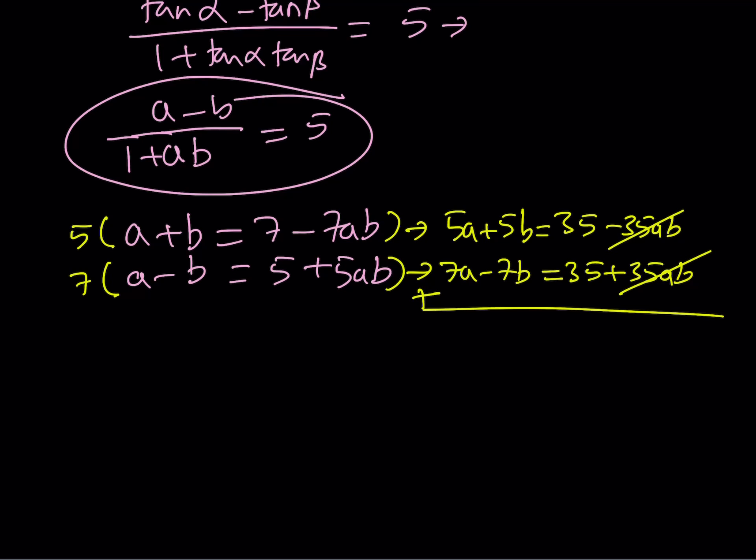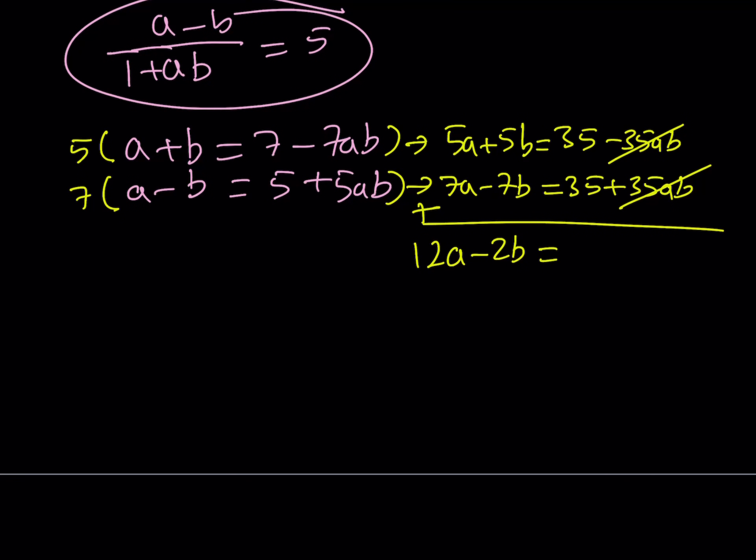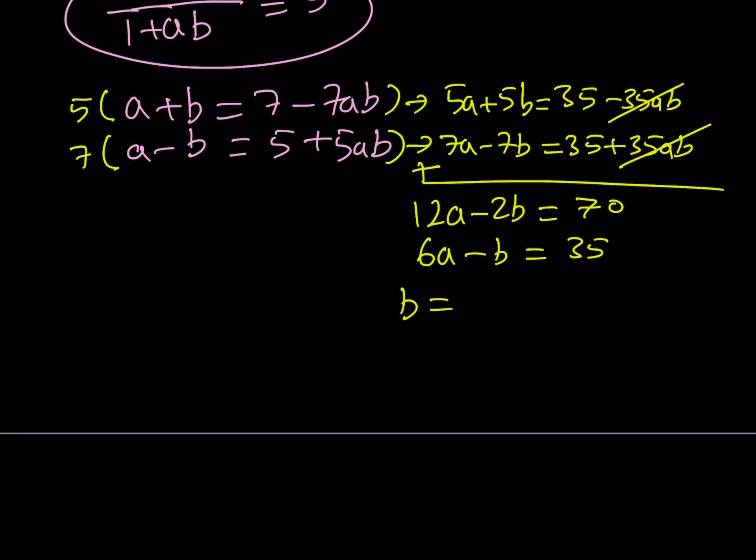Now when you add these two equations, 35ab is going to cancel out. You're going to get something nicer because you're not going to have the product. This is going to give you 12a minus 2b. To be or not to be equals 70. From here we can divide everything by 2, so 6a minus b equals 35. It's very easy to isolate b. Write b as 6a minus 35.